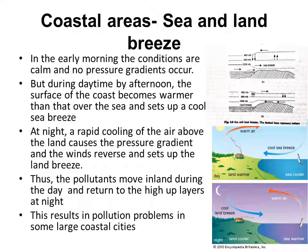This causes cool breeze from the sea to move towards the coast. At night, a rapid cooling of the air above the land causes a pressure gradient and the winds reverse, setting up a land breeze — that is, wind flows from the coast towards the sea. Thus, pollutants move inland during the day and return to upper layers at night, which results in pollution problems in some large coastal areas with industries located near the coast.